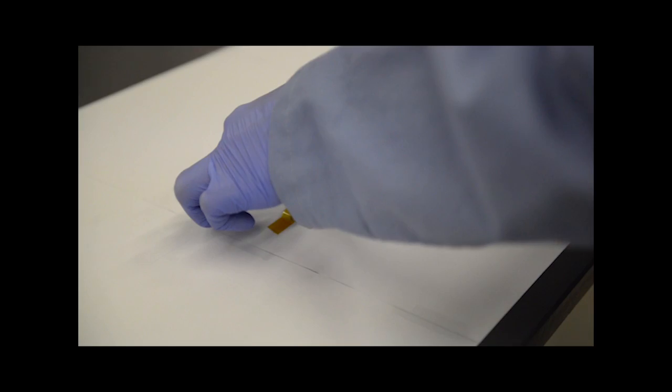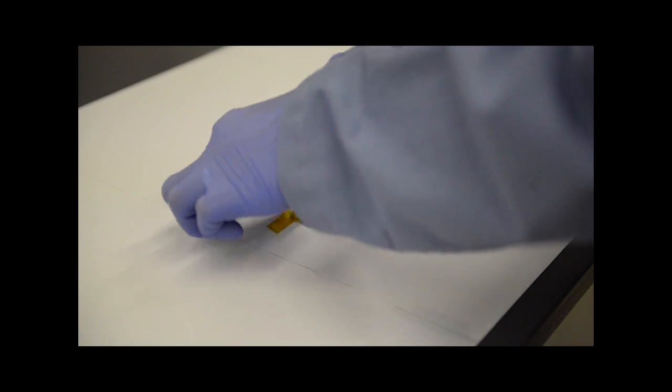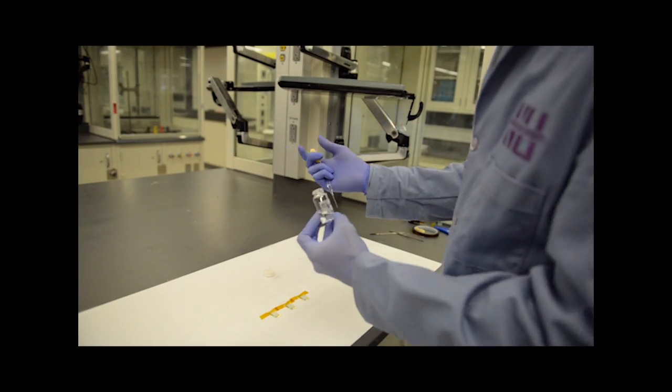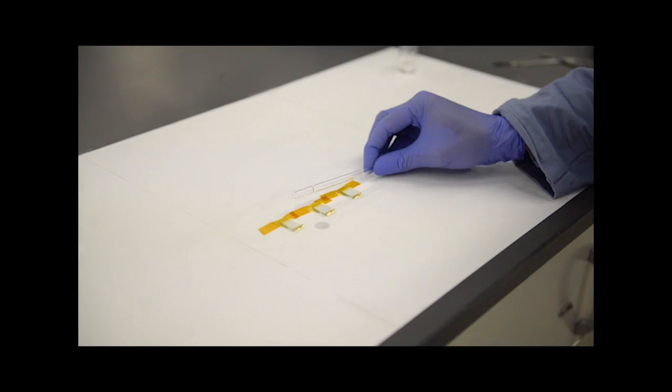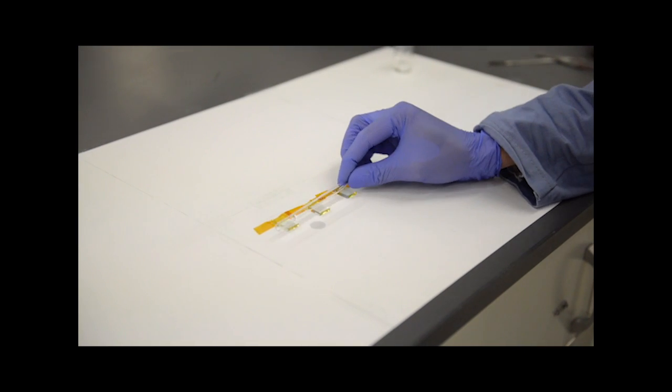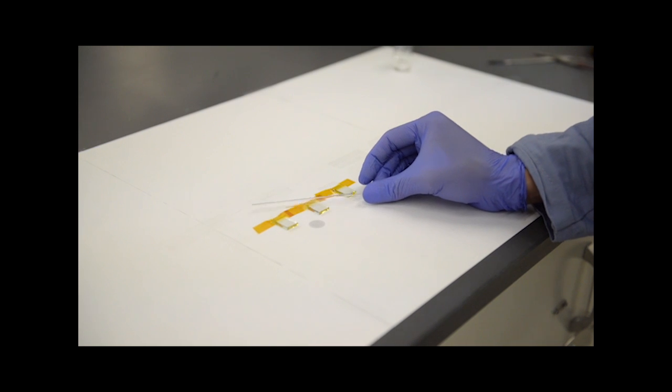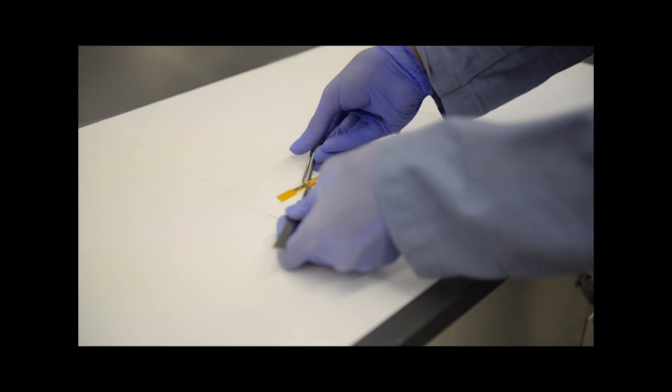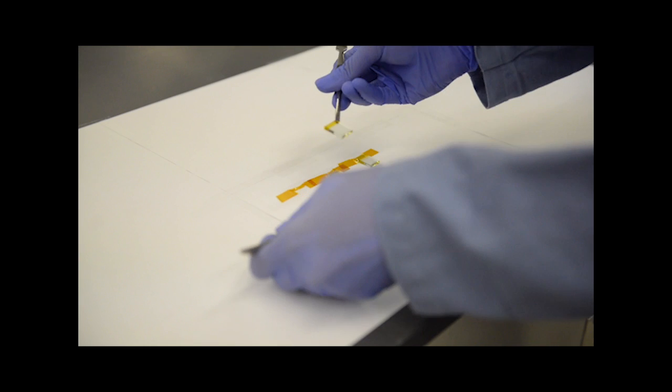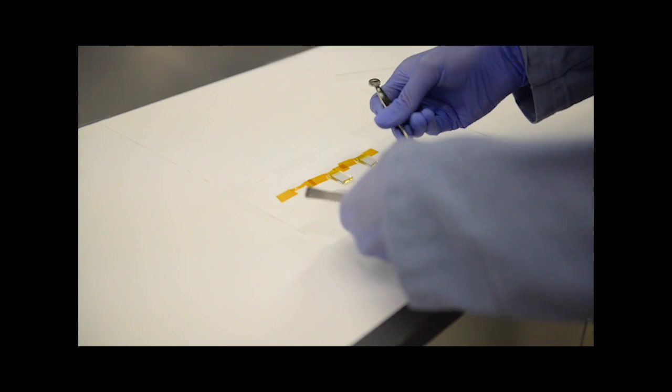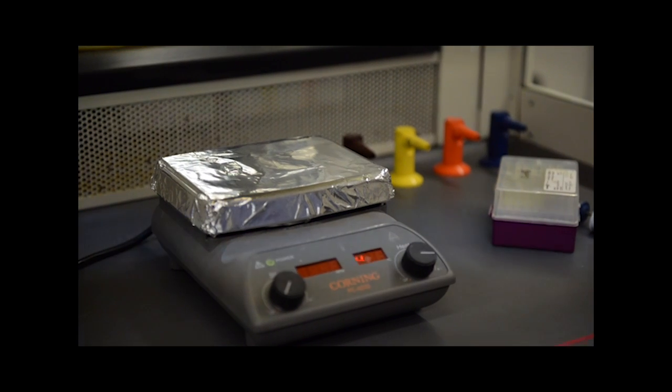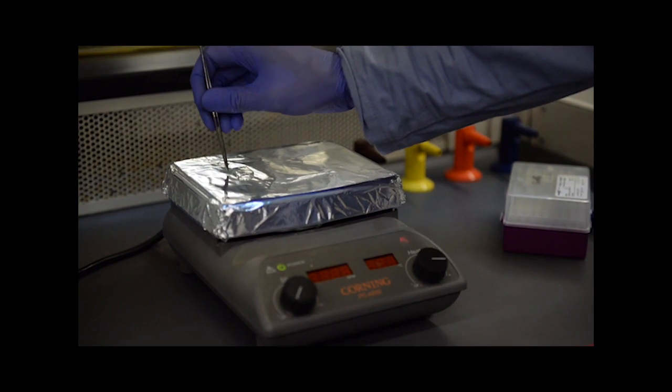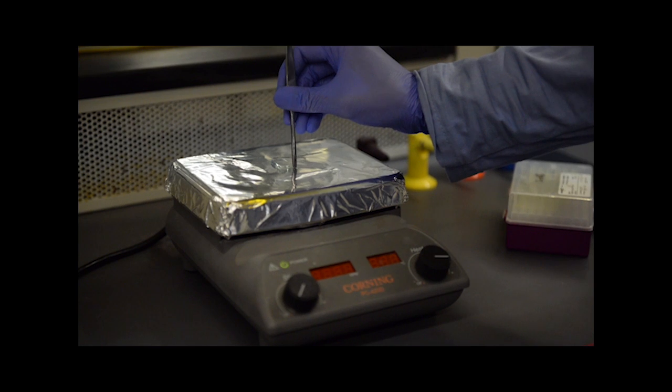To deposit the titania layer, place the FTO glass on the bench top with the conductive side facing up. We deposit one drop of titania solution onto the glass and spread it across the surface with a glass pipette. Then we remove the tape entirely and place the glass piece on a hot plate facing up. We heat it at 450 degrees celsius for about 20 minutes and let it cool down for about 10 minutes.